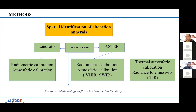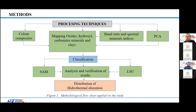The process begins with pre-processing, applying radiometric and atmospheric calibration to the sensor data. The processing techniques are used to identify and map hydroxyl minerals, carbonates, and clays using color composites to determine elements in the study area, along with band ratios, mineral indices, and principal component analysis.